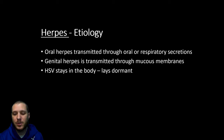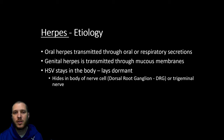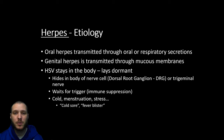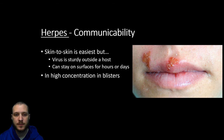Oral herpes is transmitted through oral or respiratory secretions, whereas genital herpes is more transmitted through mucous membranes. Once you get herpes it stays in your body for the rest of your life. It lays dormant in the cell body of a nerve near the spinal cord called the dorsal root ganglion, and waits until the immune system becomes suppressed enough where it can sneak out and reinfect the nerve — which is why we call them cold sores or fever blisters.